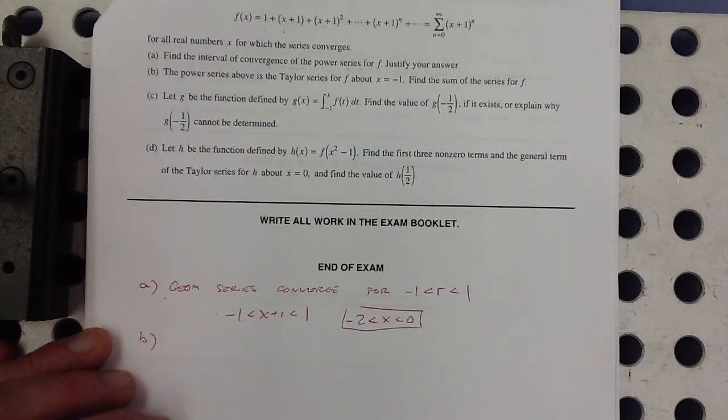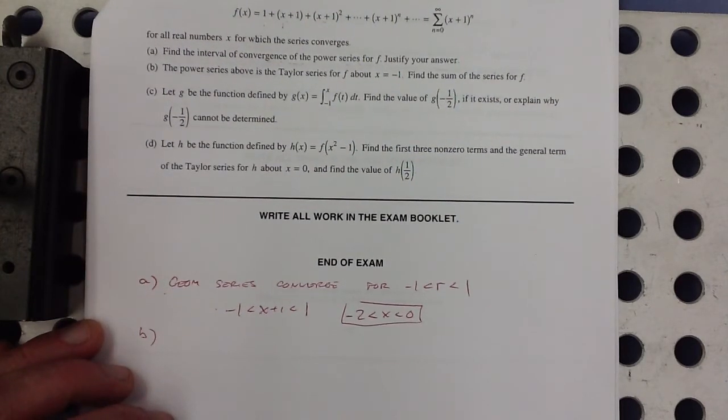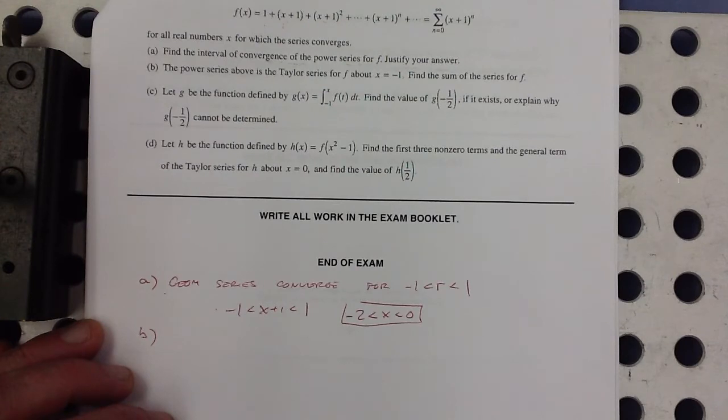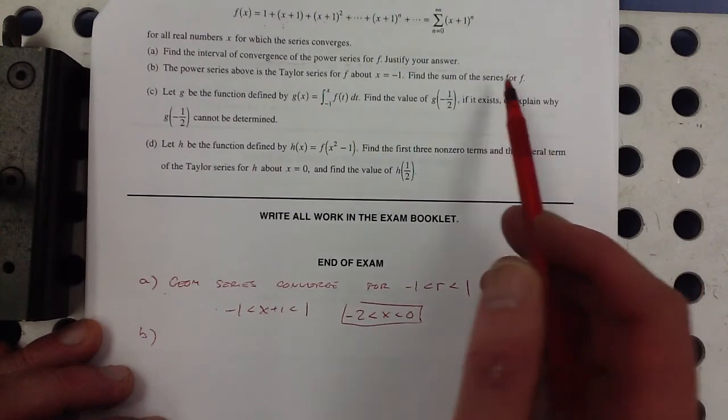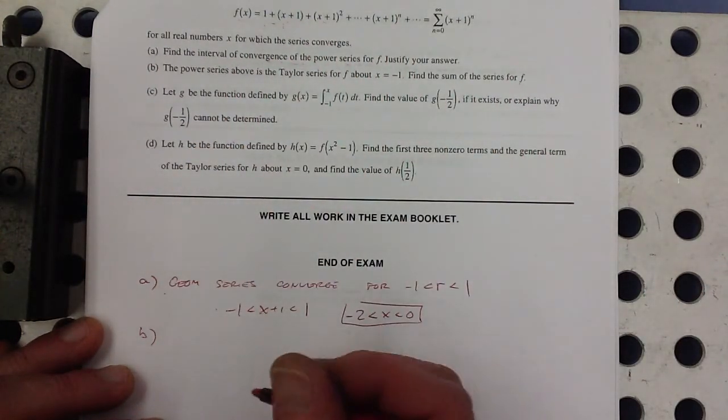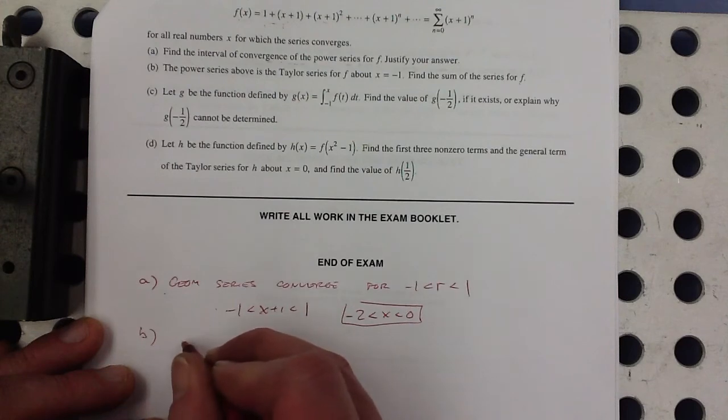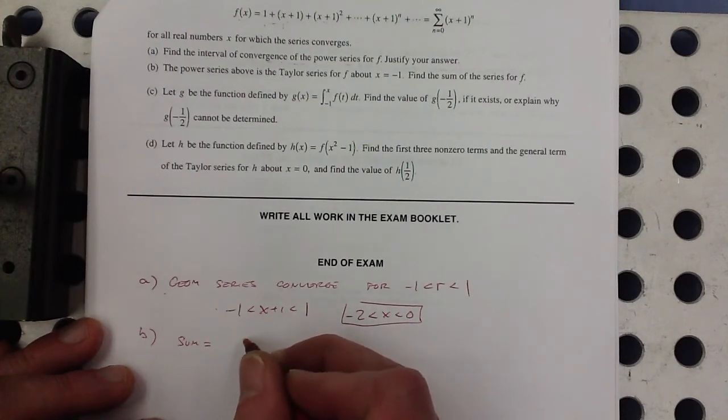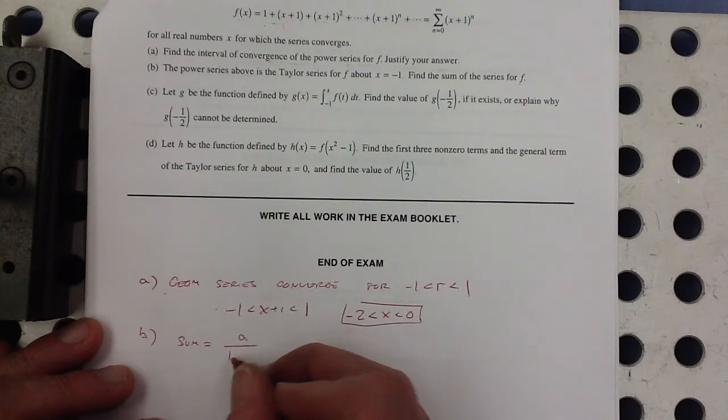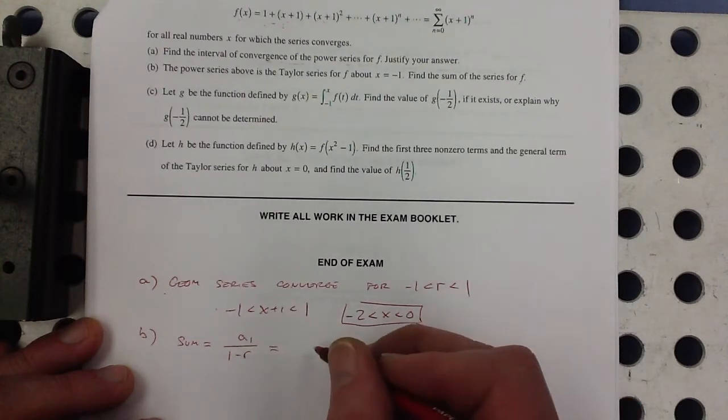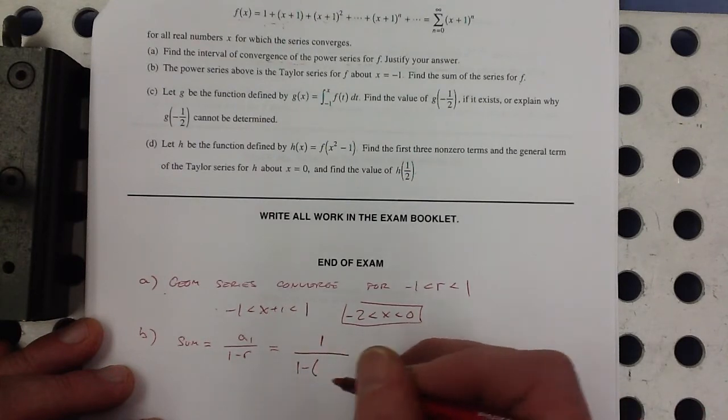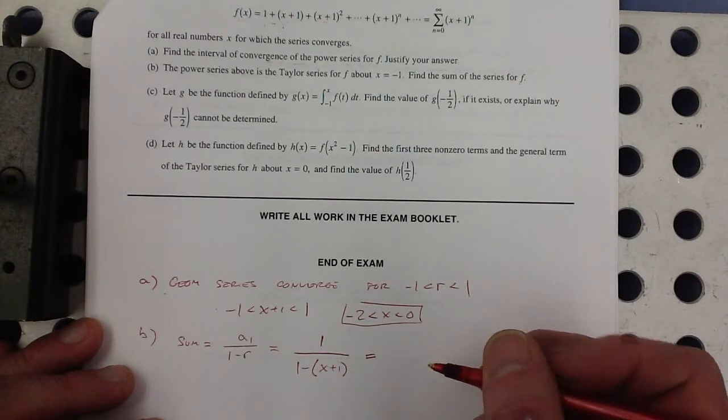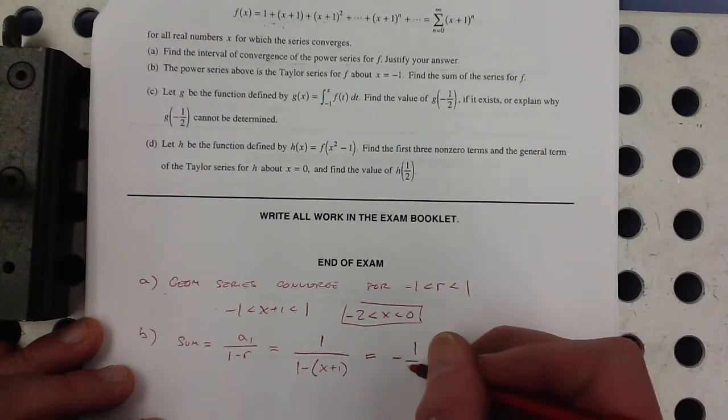Part B, the power series above is the Taylor series for f about x equals negative 1. Find the sum of the series for f. Well, that's, again, recognizing that it's geometric. The sum of the series is, since it's geometric, it's the first term over 1 minus r. So the first term is 1, and the multiplier is x plus 1. So that looks like it's negative 1 over x.